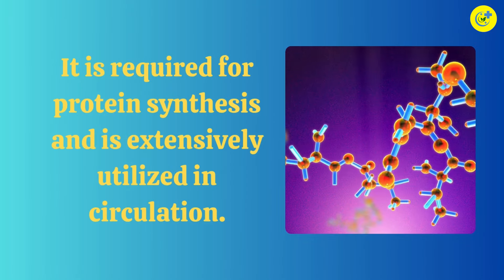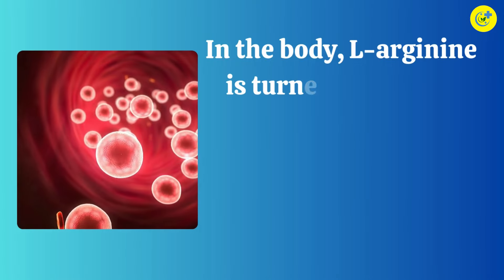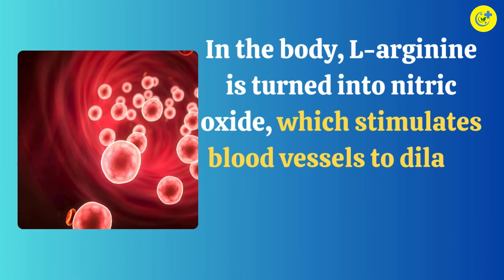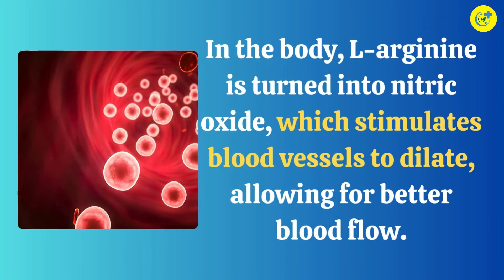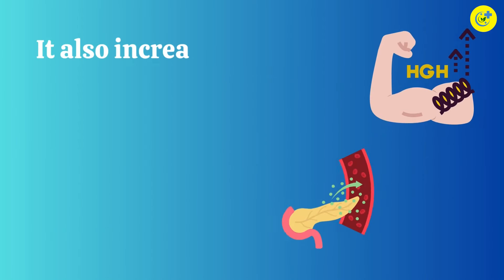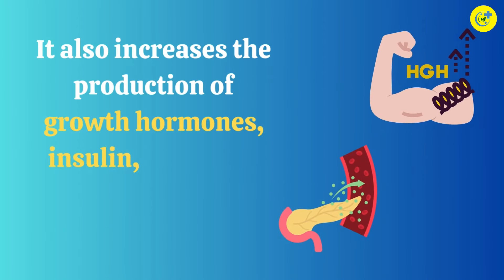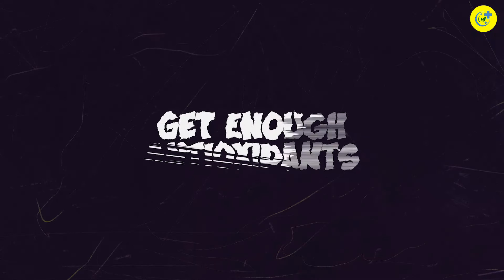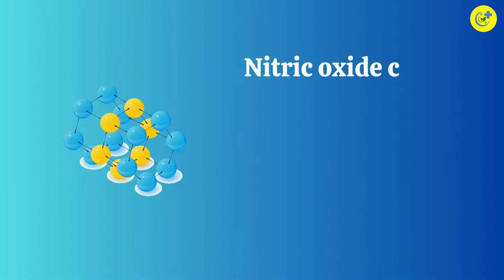cashews, and pumpkin seeds. It's required for protein synthesis and is extensively utilized in circulation. In the body, L-Arginine is turned into nitric oxide, which stimulates blood vessels to dilate, allowing for better blood flow. It also increases the production of growth hormones, insulin, and other hormones in the body.